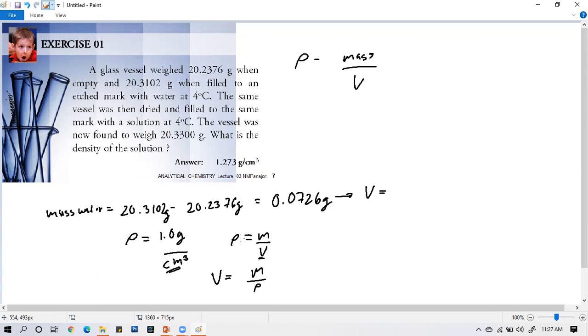But what we're looking for is the volume. The density of water is 1 gram per cubic centimeter. In order to calculate the volume, since density is mass per volume, we arrange the equation: volume equals mass over density. Therefore, the volume of the empty vessel based on the mass of water, that's 0.0726 grams over 1.0 grams per cubic centimeter equals 0.0726 cubic centimeters. This will be our volume.